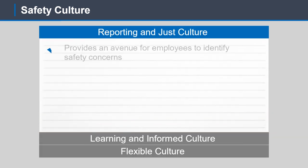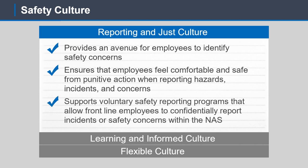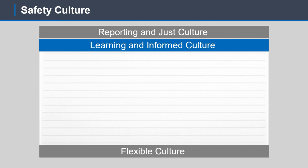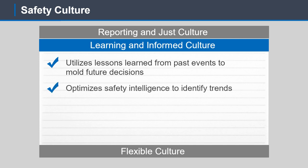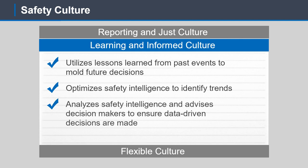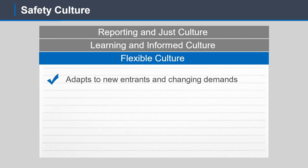The ATO's safety culture must adhere to the following standards. A reporting and just culture provides an avenue for employees to identify safety concerns, ensures employees feel comfortable and safe from punitive action when reporting hazards, incidents, and concerns, and supports voluntary safety reporting programs for confidential reporting. A learning and informed culture utilizes lessons learned from past events to mold future decisions, optimizes safety intelligence to identify trends, and advises decision-makers to ensure data-driven decisions are made. Finally, a flexible culture adapts to new entrants in the NAS and changing demands, and adjusts to gathered safety intelligence.